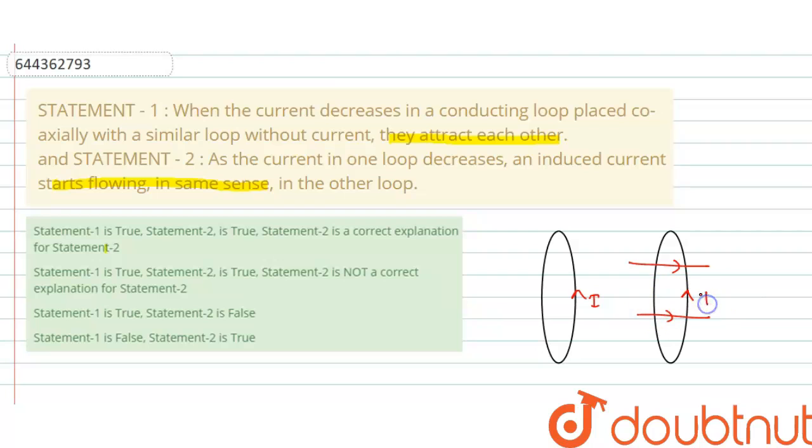So current induced in second coil is also in same sense. And we know that when two parallel wires have current in same direction, then they attract each other. So that's why these two coils attract each other.